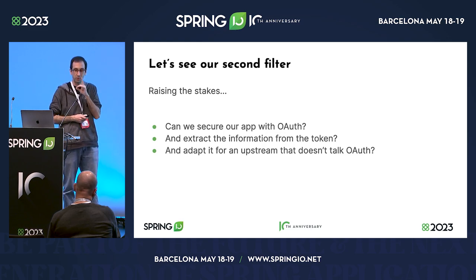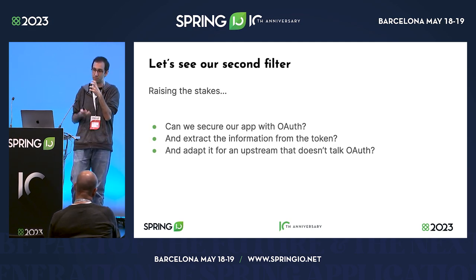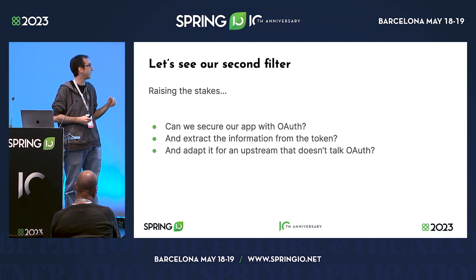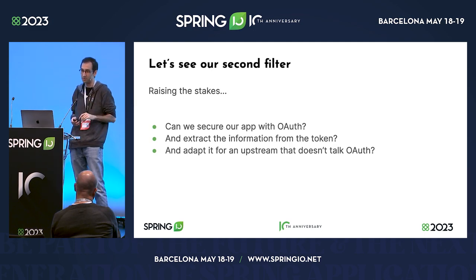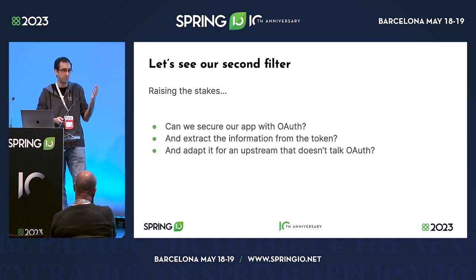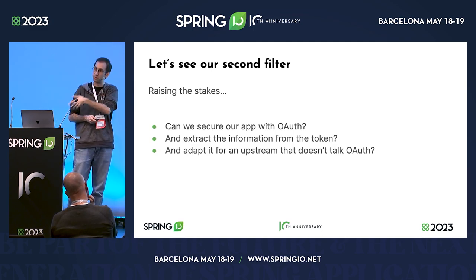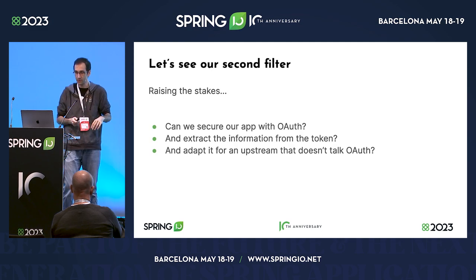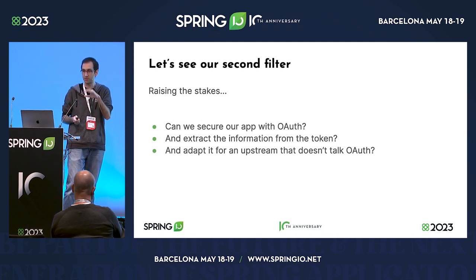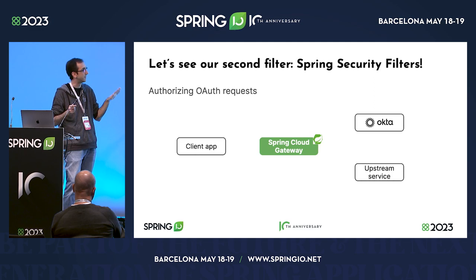We want to extract some information from the token. The OAuth token provides information in the form of claims — basically key-value pairs. We want to add this security and access the token, and do this on a service that doesn't talk OAuth and doesn't care about OAuth. That app team service is not going to be modified in any way. That's precisely one of the good scenarios for adding a gateway: you can add cross-cutting concerns like security and extrapolate them to all your backend services without touching anything.